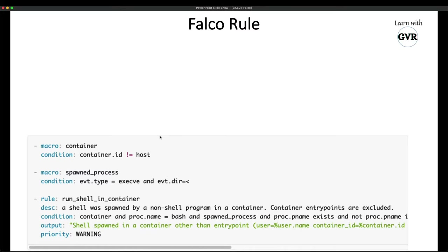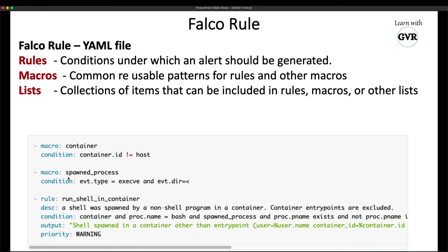A Falco rule is a YAML file. It has: rules, macros, and lists. The rule has a name — for example 'Run Shell in a Container' — a user-friendly description, and a condition such as 'container and proc.name equals bash and spawned process and proc.name exists'. Macros are reusable common patterns to identify system-specific calls. The output defines what to print in the monitoring mechanism.